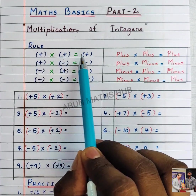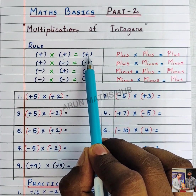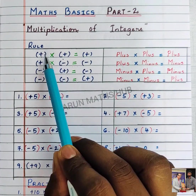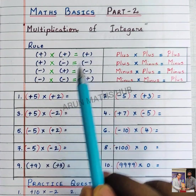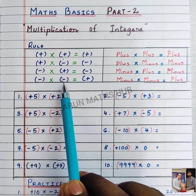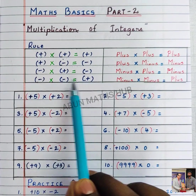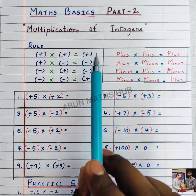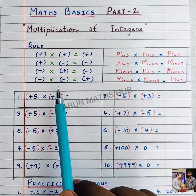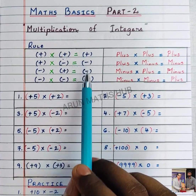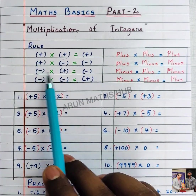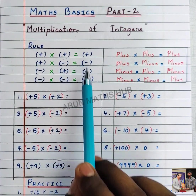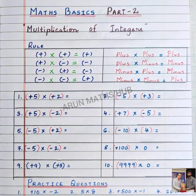When the signs are same, it is plus — plus into plus is plus, minus into minus is plus. When the signs are different, you get minus.